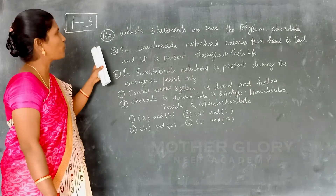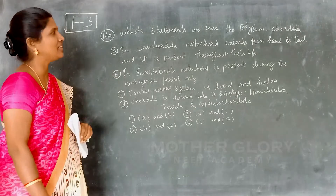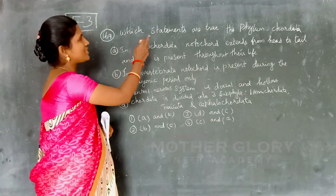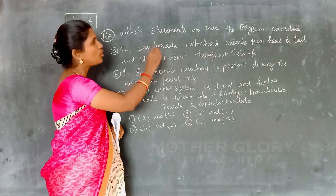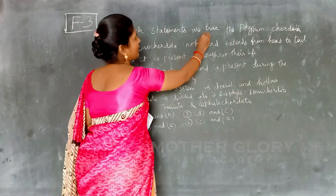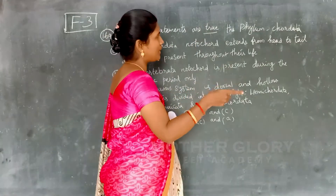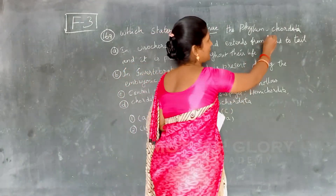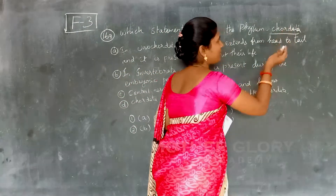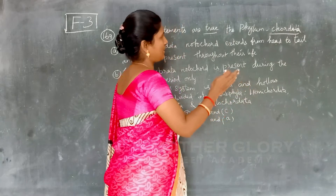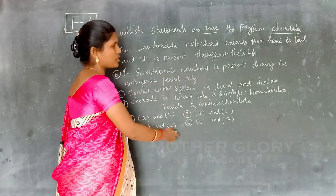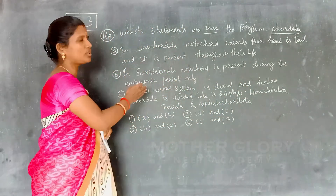Next question, number 169. So which statements are true? If you want to say 5M Chordata, there are 4 options.